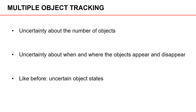So in addition to the challenges that we had earlier, we now have uncertainty about the number of objects, uncertainty about when and where the objects appear and disappear, and just like before, we have uncertainty about the states of the objects.